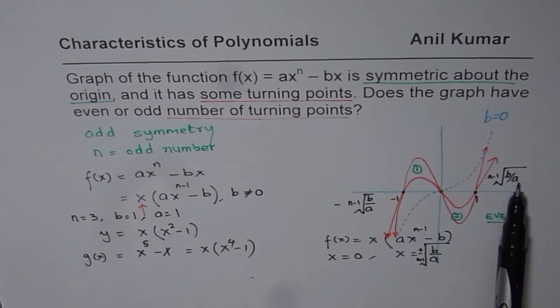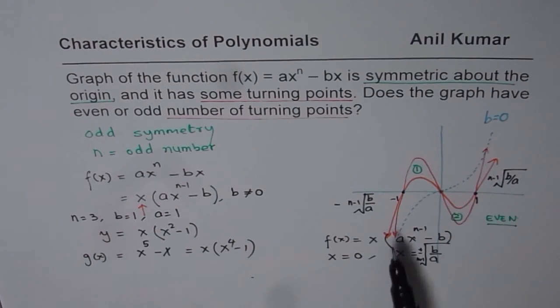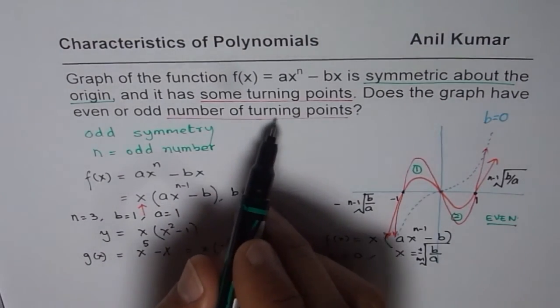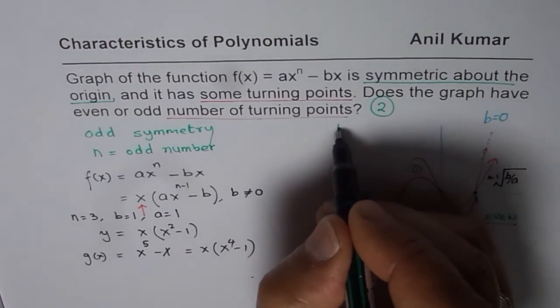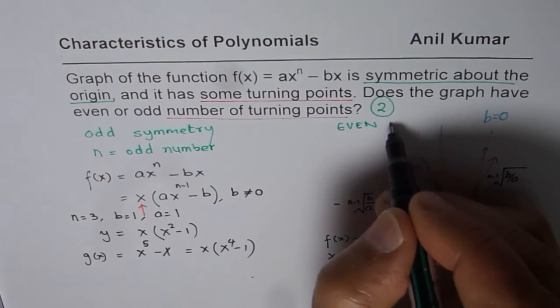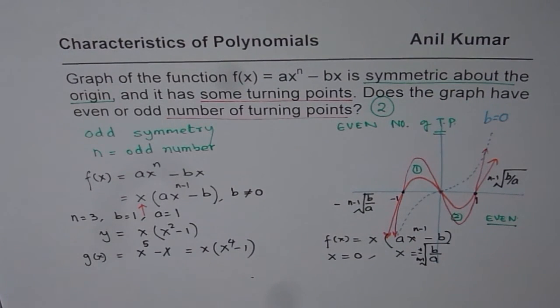What you can do is you can sketch different graphs and figure out the answer. So what we notice is that this function, the number of turning points will always be 2. So there will be only 2 turning points. Since the question is even or odd, we will say it has even number of turning points. However, the number is exactly 2. It will not be 4, 6, 8 if the degree n is 10 or n is 11. It is not going to be 4, 6, 8. It is only going to be 2. So that is kind of important to understand. I hope that helps. Thank you and all the best.